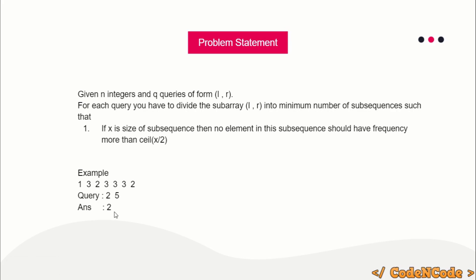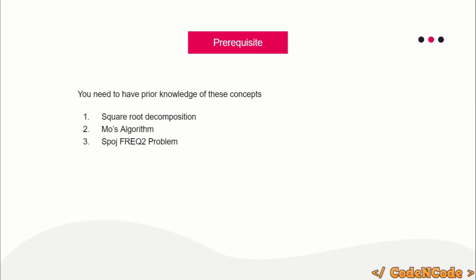You can go through the problem statement on the website; I'll put the link in the description. The prerequisites for this solution are Mo's algorithm, which uses square decomposition. I've also uploaded an editorial for the Freq-2 problem. I have courses on square decomposition and Mo's algorithm — links are in the description. Make sure to go through that editorial as well, because we'll be utilizing almost all of the code from that problem in this one.